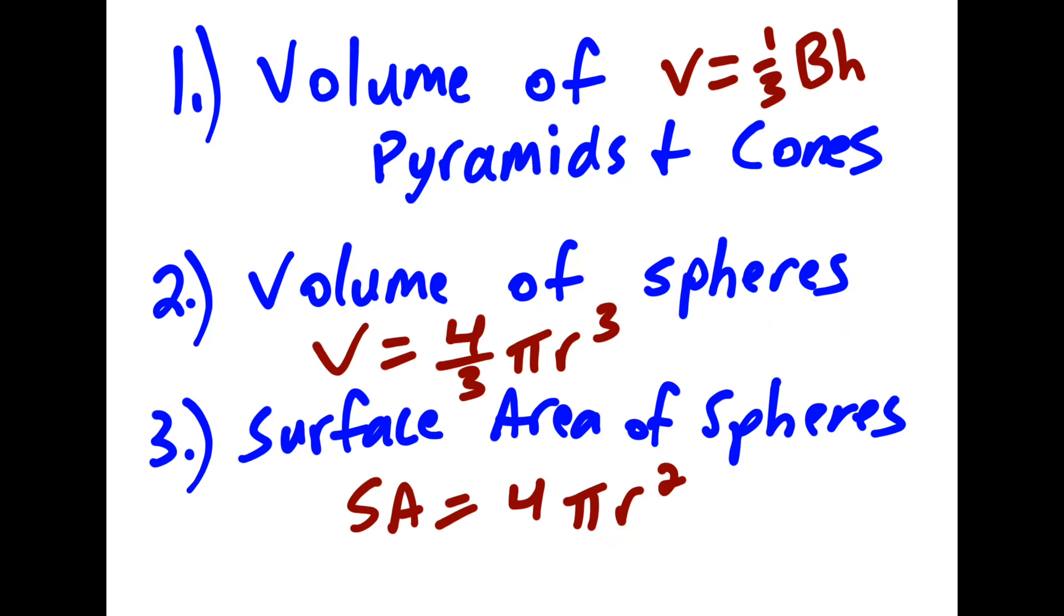When it comes to spheres, four-thirds pi r cubed finds the volume. And for surface area, it involves plugging in the radius again. This time it's four pi r squared.